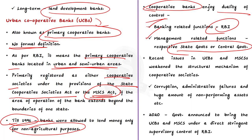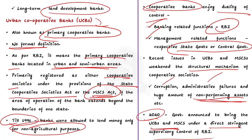In recent times, cooperative banks are surrounded by a lot of issues — corruption, administrative failure, and huge amounts of NPAs (non-performing assets) — which have weakened their structural mechanism. We cannot forget the Punjab Maharashtra cooperative bank scam. The way forward is to bring cooperative banks completely under RBI's regulation with stronger supervision and control. In 2020, the government announced bringing UCBs and MSCS under the direct stringent supervisory control of RBI.